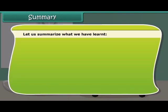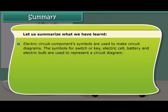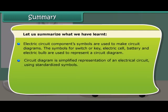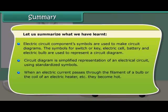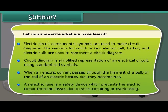Let us summarize what we have learned. Electric circuit component symbols are used to make circuit diagrams. The symbols for switch or key, electric cell, battery, and electric bulb are used to represent a circuit diagram. A circuit diagram is a simplified representation of an electrical circuit using standardized symbols. When an electric current passes through the filament of a bulb or the coil of an electrical heater, they become hot. An electric fuse is a safety device which prevents the electric circuit from losses due to short circuiting or overloading.